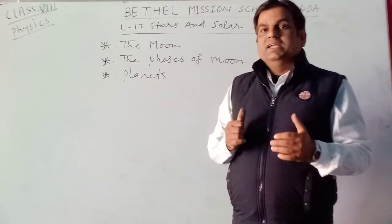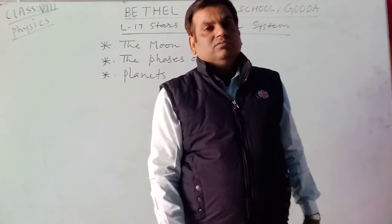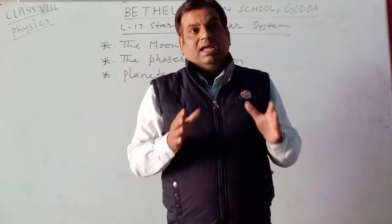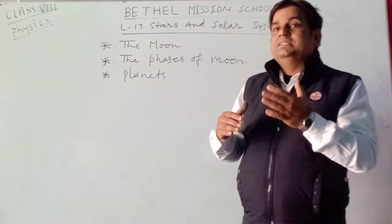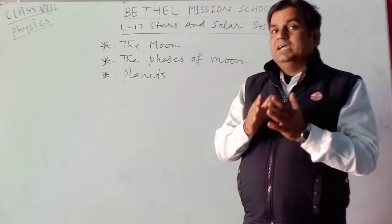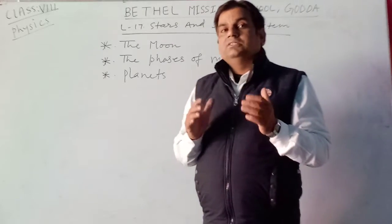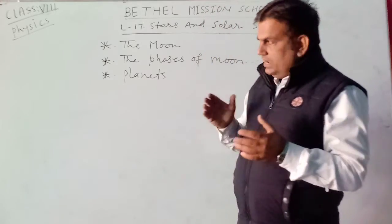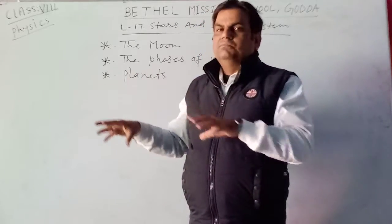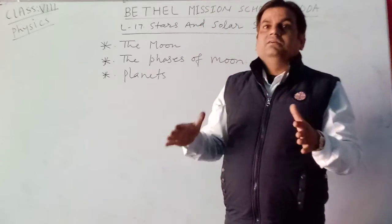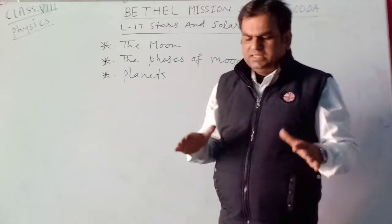There is no atmosphere on the moon, no air. That is why the daytime temperature is very high — about 110 degrees Celsius — and the night is very cold, about minus 150 degrees Celsius. The surface has hard areas, loose areas, hills, mountains, and craters. These are the different kinds of surface features of the moon.